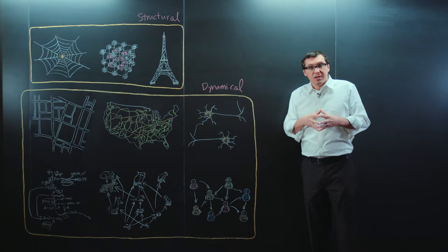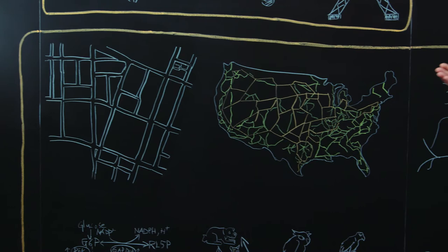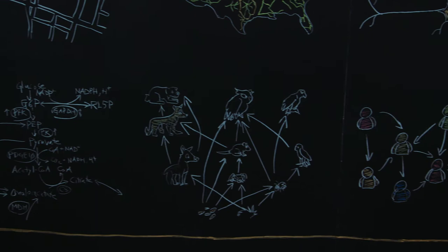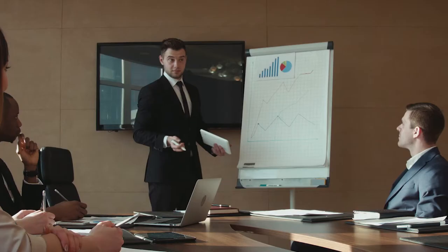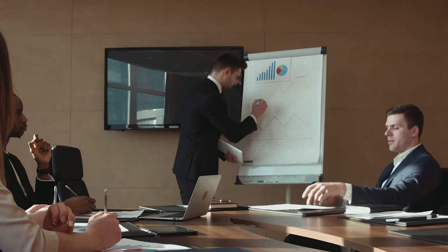But there is a potentially much larger class of network systems whose main function is not structural. It is instead to mediate a process, such as in the case of road networks, power grids, neuronal networks, metabolic networks, food webs, and social networks, among many others.